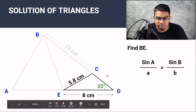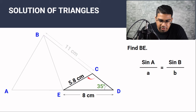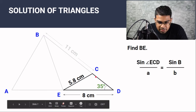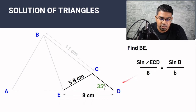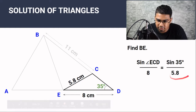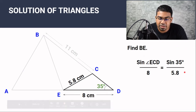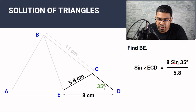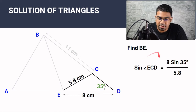To apply this to our question, we want to find angle ECD. Sine of angle ECD over its opposite side, which is 8, equals sine of 35 degrees over the opposite side, which is 5.8. So sine 35 over 5.8. When we rearrange to make sine ECD the subject, we get 8 times sine 35 over 5.8. When we find the arc sine of this value in the calculator, we will get a basic acute angle.